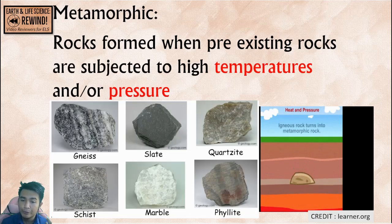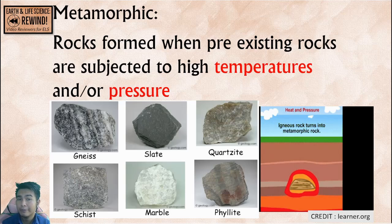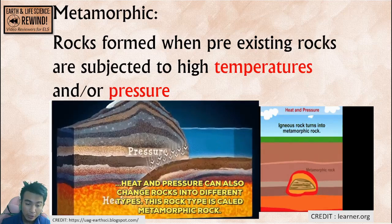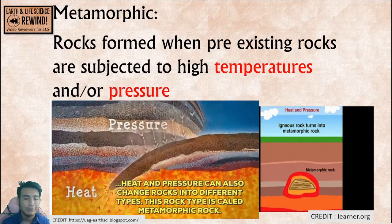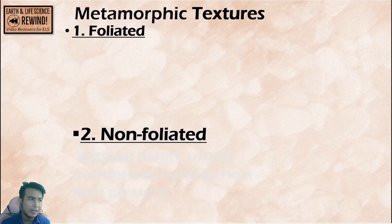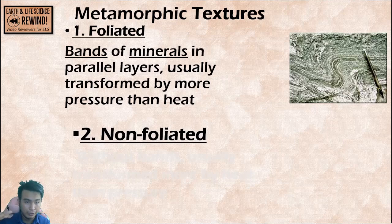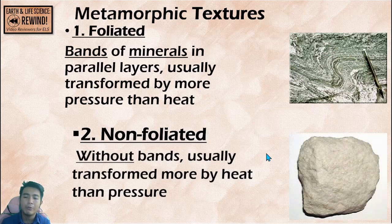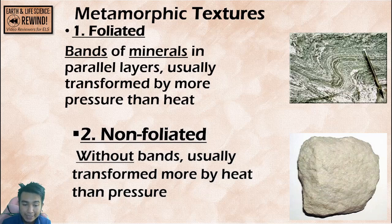Unlike igneous rocks, which were magma or lava before, and sedimentary rocks, which were sediments or fragments before, metamorphic rocks are already rocks before they transform. When these rocks undergo extreme heat and pressure, or either of the two, they change their form into another kind of rock — metamorphic. Metamorphic rocks are classified by texture: foliated, meaning they have bands and layers of minerals usually transformed by pressure; and non-foliated, without bands, purely homogeneous, usually transformed more by heat.